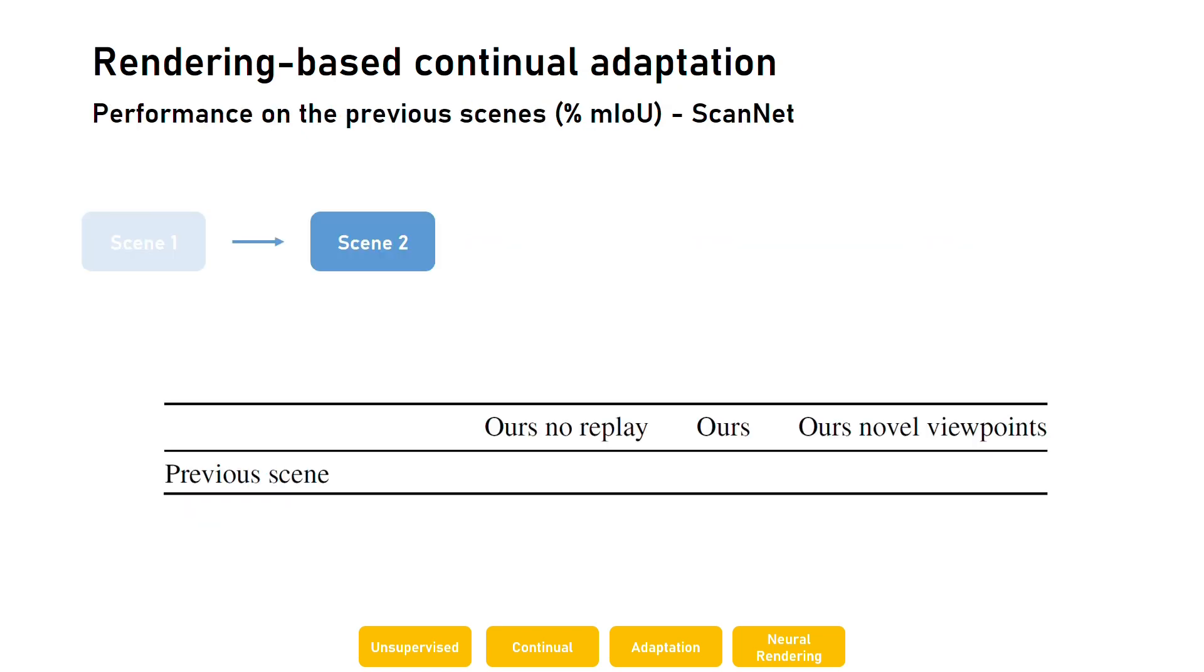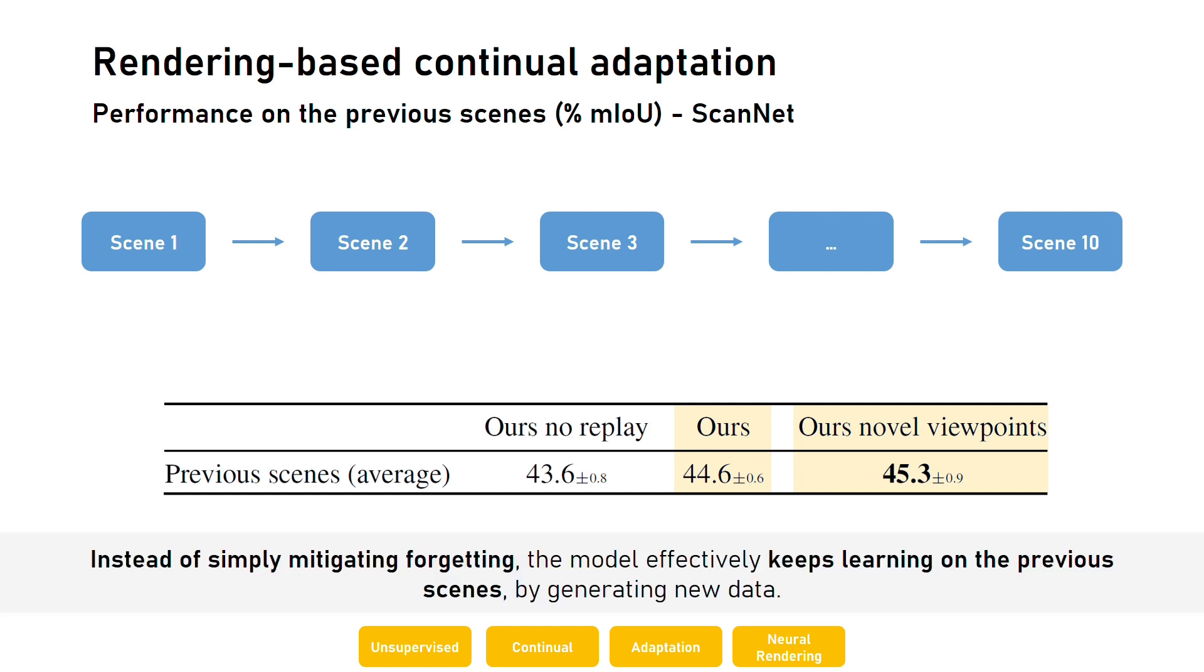When considering at each adaptation step the average performance on the previous scenes, our method effectively counteracts forgetting with respect to adaptation without replay. More interestingly, however, we find that when replaying from novel viewpoints instead of training ones, the performance on the previous scenes increases further. In other words, instead of simply mitigating forgetting, the model effectively keeps learning on the previous scenes by generating new data.